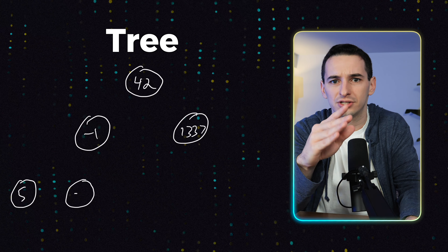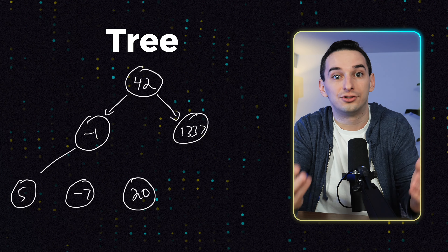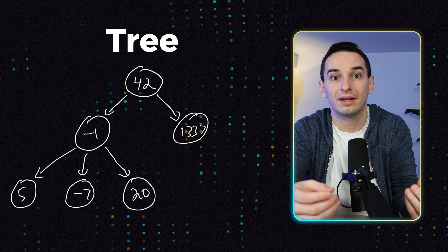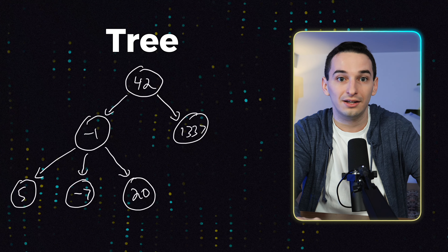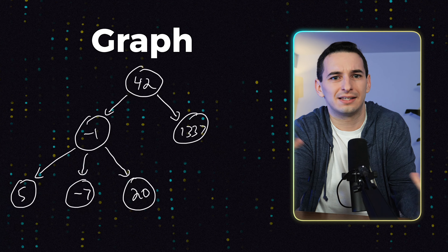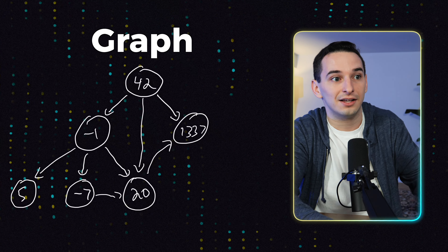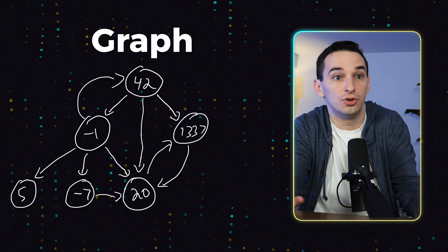Linked lists are actually just a special case of what we call a tree. A tree data structure is again just a bunch of nodes each with a value, but instead of having just a next pointer, a tree node can have multiple pointers to what we call its children nodes. A linked list is a special case of a tree where each node only has one child. And interestingly, trees are actually just a special case of a graph. A graph doesn't have the parent-child restriction of trees, so you can have loops. Each node in a graph has what we call edges to other nodes, and these can go to any other node in the graph.